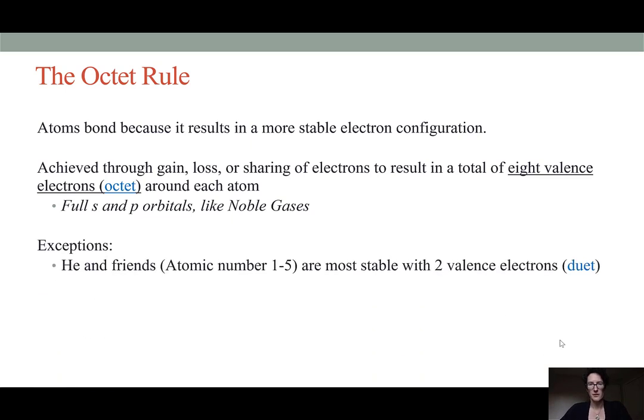There are some exceptions to note. For instance, helium and its friends. Helium is the first or smallest noble gas, and it has an electron configuration of 1s2. There are no p orbitals with a quantum number of 1, so 1s2 is a completely full valence shell. The first five elements of the periodic table will actually favor having a duet or two valence electrons rather than having eight.